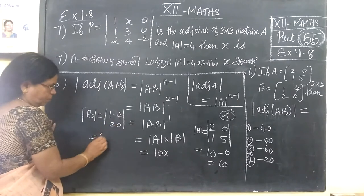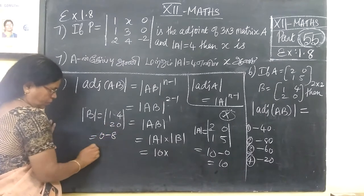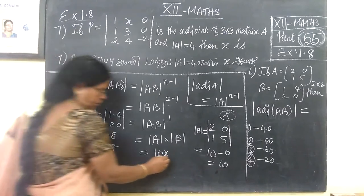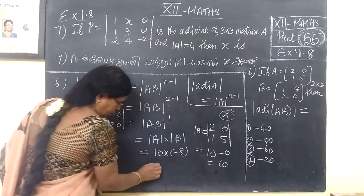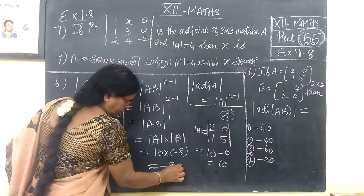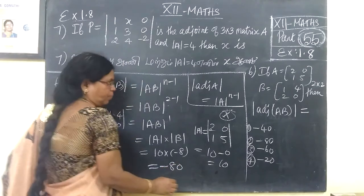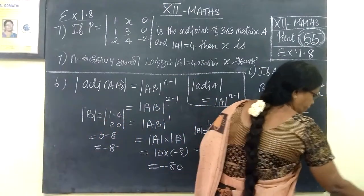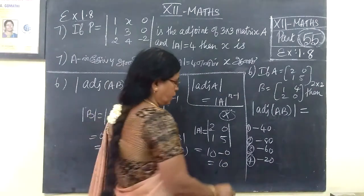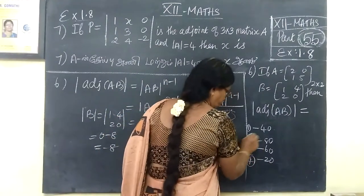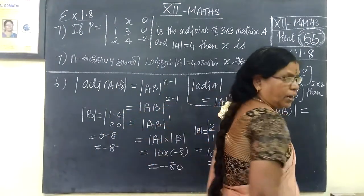Equal to 0 multiplied by 0, just 0, minus 8. So the answer for this is minus 8. Then option 2. The answer is option number 3.